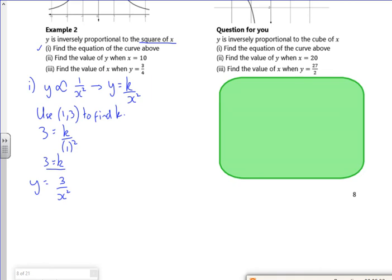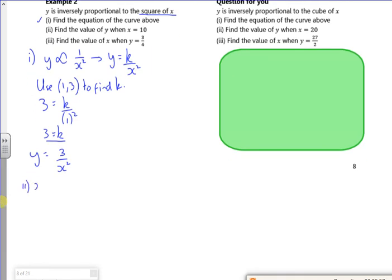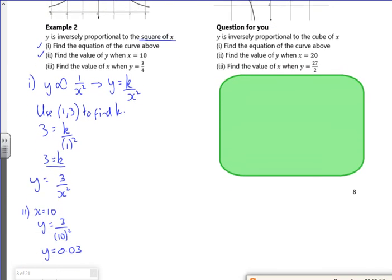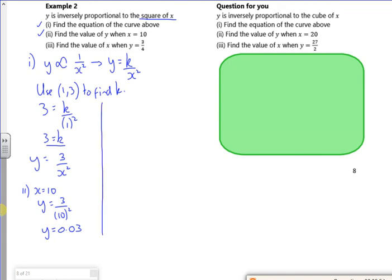Part 2 says find the value of y when x is 10. So when x is 10, y is 3 over 10 squared, y is 3 over 100, or 0.03. Now we're not giving any units for this, are we? So we can't put any units in. But if we did, then we would.